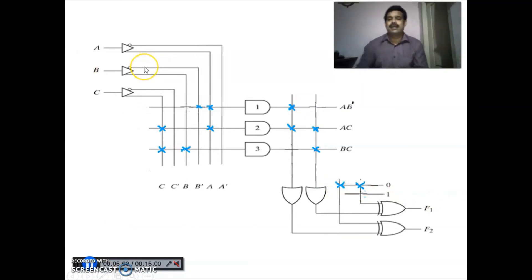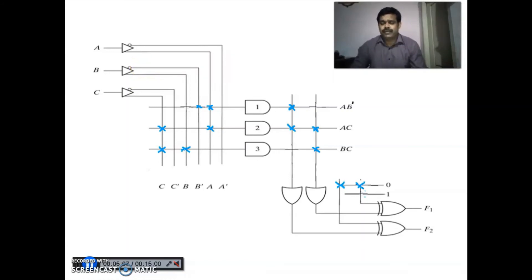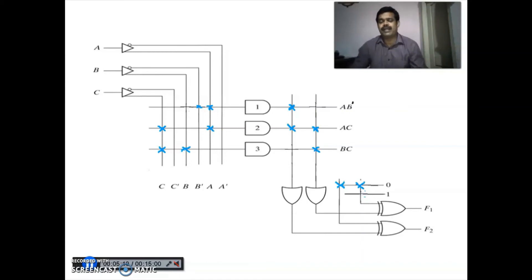This is the implementation of the problem. In the previous problem they asked to implement with four product terms, but after minimizing F1 and F2 we got six product terms. After taking complements and comparing, we found that using F1-bar and F2 the four-product-term condition is satisfied, so we implemented accordingly.